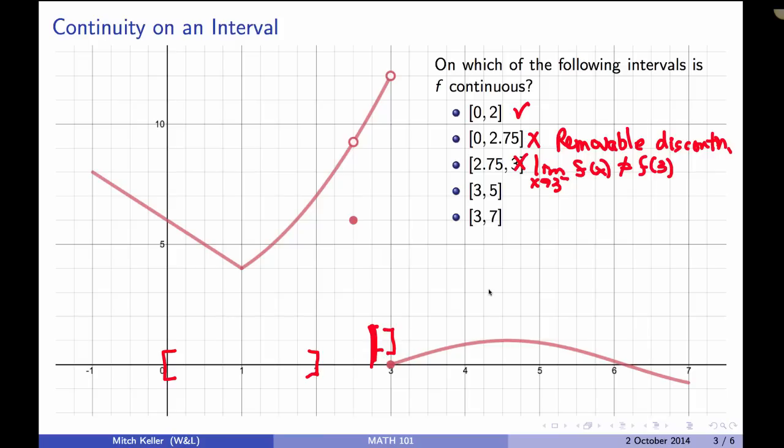On the interval from 3 to 5, it'd be here to here, that meets all of our criteria, because we don't care what's going on from the left at 3. We only care about the limit as x approaches 3 from the right of f(x). That equals f(3), which is 0. And everything else is perfectly good, out to 5, and we can even extend that all the way out to 7. So we've found some intervals where this function is continuous and others where it is not.